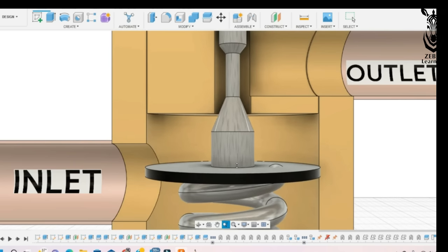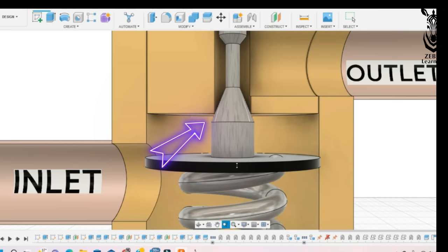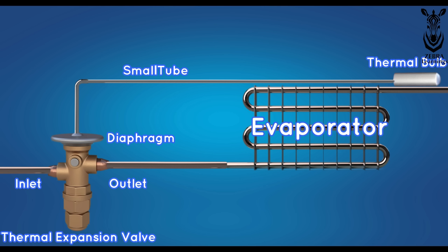Now, the diaphragm will come up due to spring force, and the way of refrigerant will be closed. This is how the thermal expansion valve sends the required refrigerant to the evaporator.